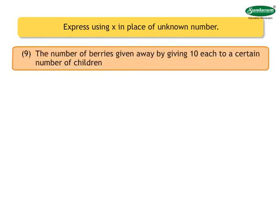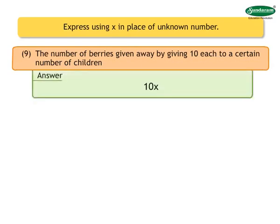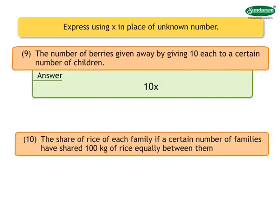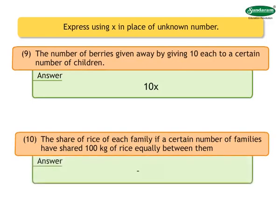Number 9: The number of berries given away by giving 10 each to a certain number of children. Answer: 10x. Number 10: The share of rice of each family if a certain number of families have shared 100 kilograms of rice equally between them. Answer: 100 upon x kilograms.